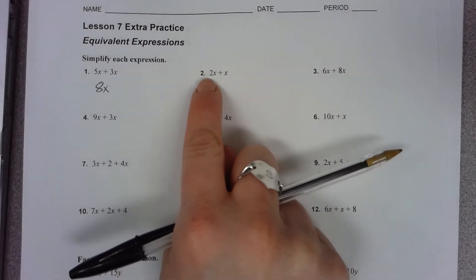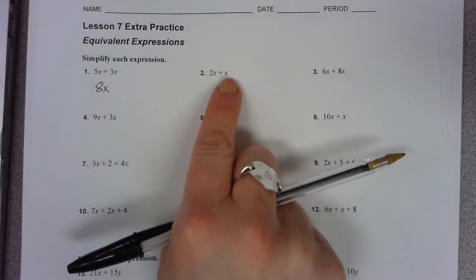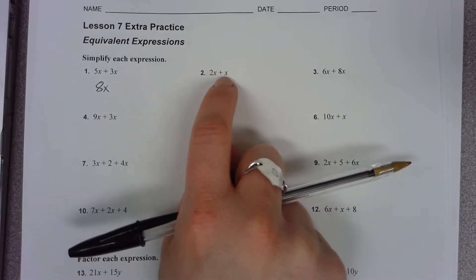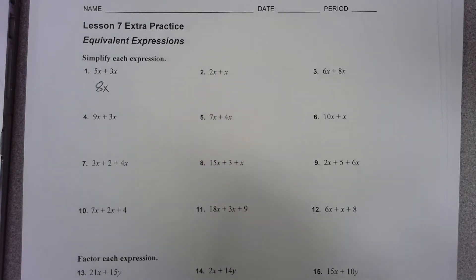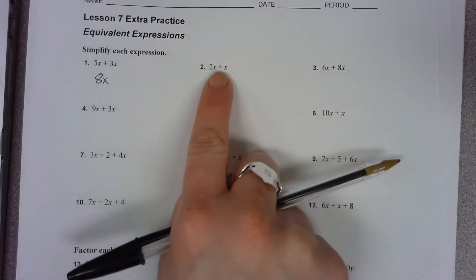Number two, 2x plus x. Remember, when we have just the variable by itself, we don't have any number out front. That is considered to be one of that variable. We never write the number one out front as a coefficient or as the number out front of a variable.